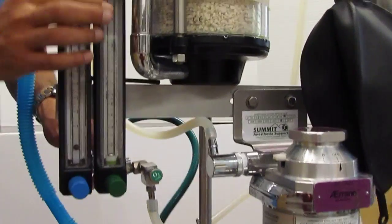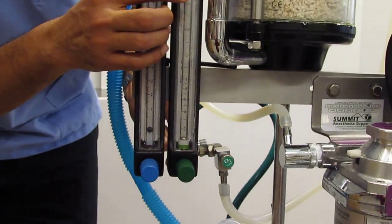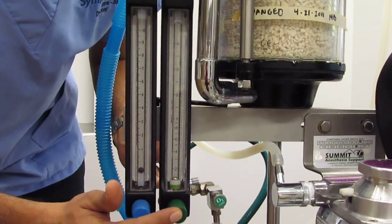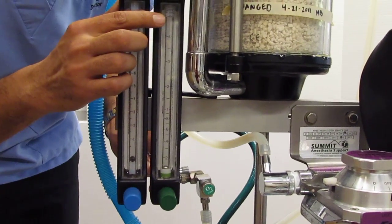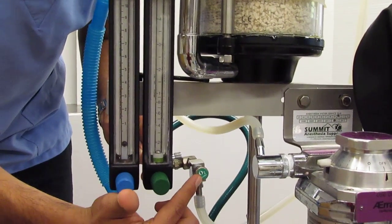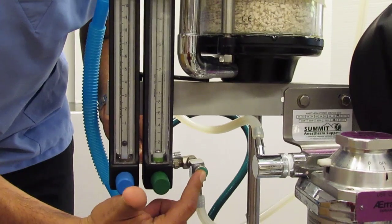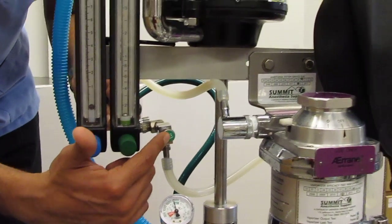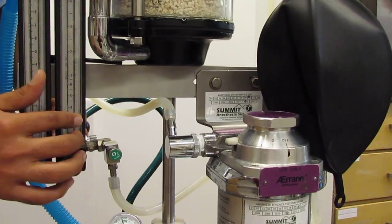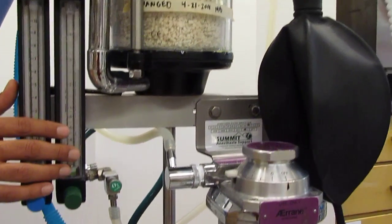So that's one thing that can happen. I can set my oxygen to my vaporizer. The other thing that can happen here is that I can bypass my vaporizer completely via the O2 flush button, okay? That's this button here, okay? You hear the oxygen flushing past the vaporizer and directly into the breathing circuit,